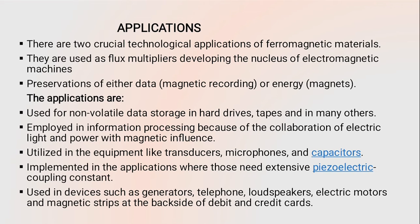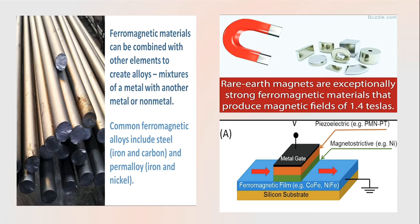Applications of ferromagnetic materials include: use as a flux multiplier, developing nuclear electromagnetic machines, preservation of data recording, non-volatile data storage in hard drives and tapes, electrical equipment like transducers, microphones, and capacitors. They are also used in devices such as generators, telephones, loudspeakers, magnetic strips, and the back of credit and debit cards.